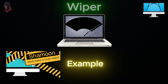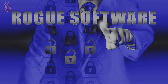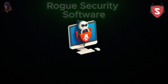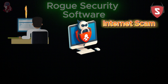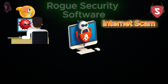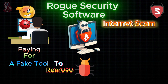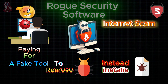Rogue Security Software: Rogue security software is a type of internet scam that deceives users into thinking their computer is infected with a virus, then tries to trick them into paying for a fake tool that claims to remove malware but instead installs malicious software. It is commonly spread through malvertising.